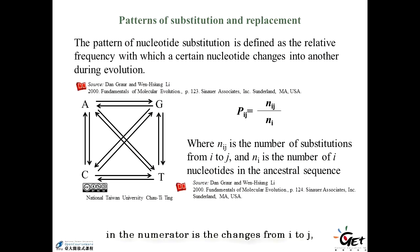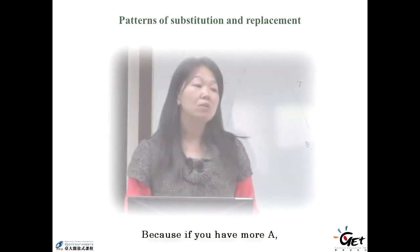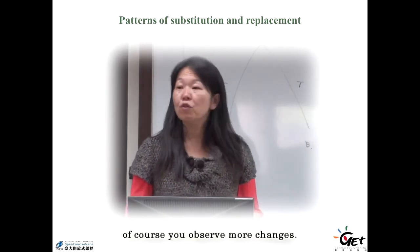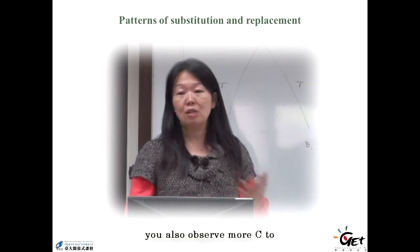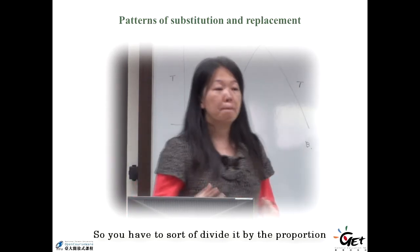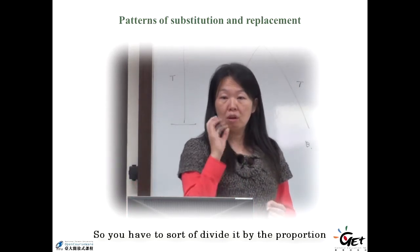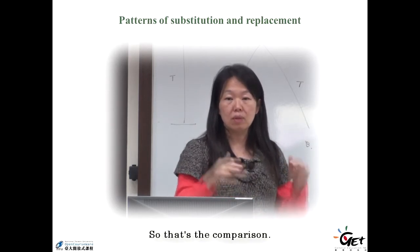So in the numerator, it's the changes from I to J — for example, from A to C. And in the denominator, it's how many A's are in the original sequences. Because if you have more A, of course you observe more changes. But if you have more C, you also observe more C to all the other nucleotides. So you have to divide by the proportion of this type in the original sequences. That's the comparison.